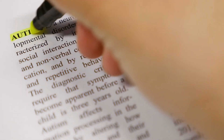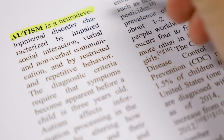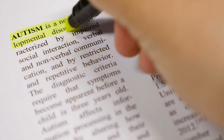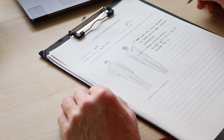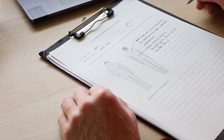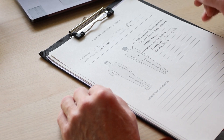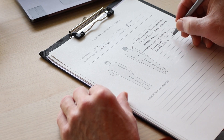Understanding autism spectrum tests: these assessments are designed to evaluate behavior and communication skills to determine if an individual may fall within the autism spectrum. It's important to note that these tests are not a definitive diagnosis, but rather a tool to guide professionals in the assessment process.